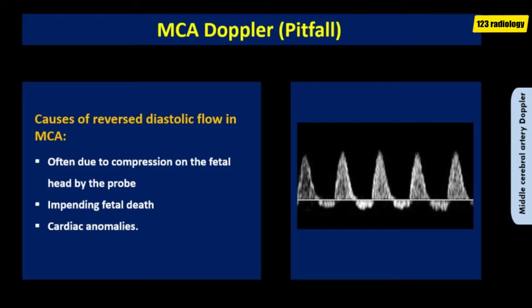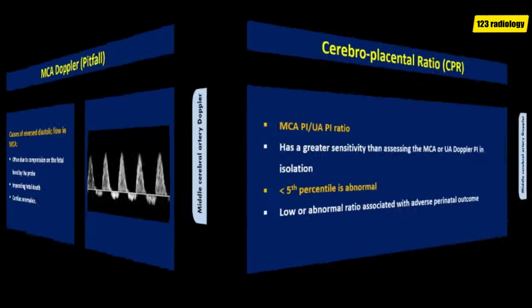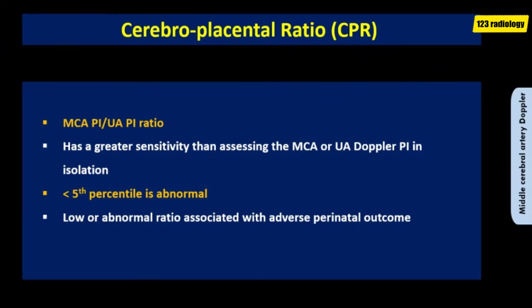Other rare causes of reversed diastolic flow include impending fetal death and complex cardiac anomalies. The cerebro-placental ratio is also used in the assessment of fetal growth restriction. It is a ratio of the middle cerebral artery pulsatility index to the umbilical artery pulsatility index. The pulsatility index is preferred over the S-D ratio for this calculation. The cerebro-placental ratio has greater sensitivity than assessing MCA or umbilical artery Doppler pulsatility indices in isolation, and a low or abnormal result is associated with adverse perinatal outcome.